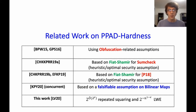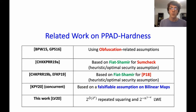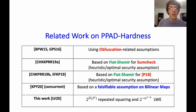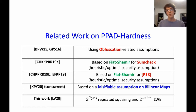Let me show what was known about PPAD hardness based on cryptography. Three results are worth mentioning: PPAD is hard under obfuscation-like assumptions; Fiat-Shamir for certain succinct interactive proofs suffices for PPAD hardness, though last year there were no concrete instantiations from standard assumptions; and concurrent to this paper, Kalai, Paneth, and Yang gave a different construction of a hard PPAD instance based on a falsifiable assumption on bilinear maps.